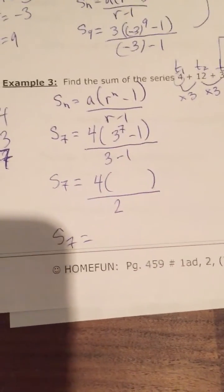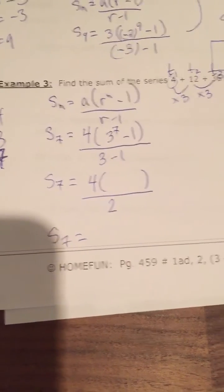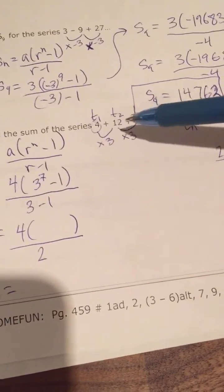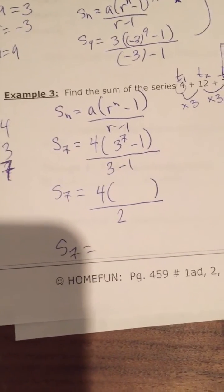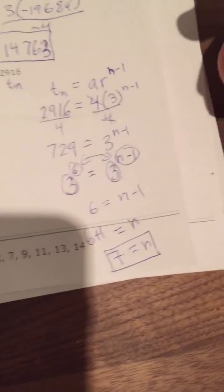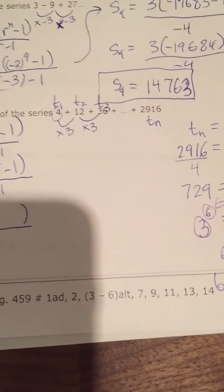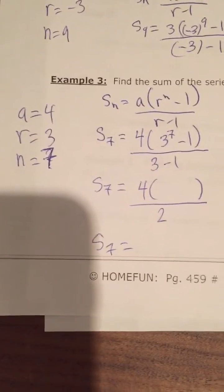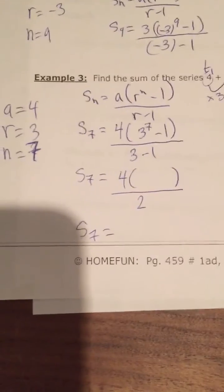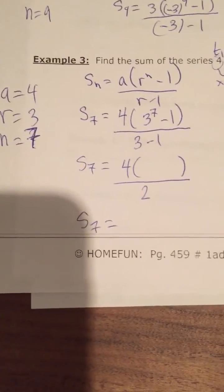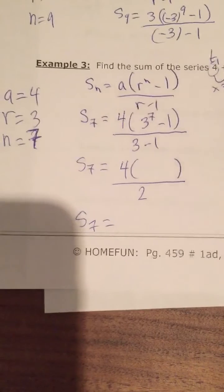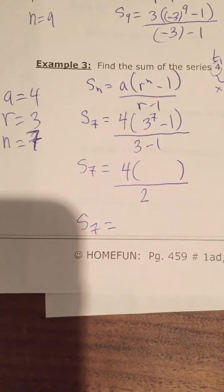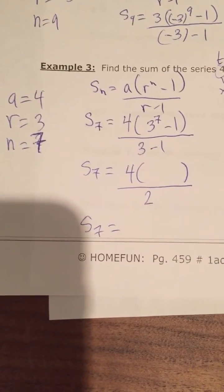Clearly it has to be a whole number — if you get a decimal, it doesn't make sense when you're adding all whole numbers together. So that's how you work through this: find how many terms are in the series using the term number formula for a geometric pattern, then plug the first term 4, common ratio 3, and 7 terms into the geometric series formula to find the sum.